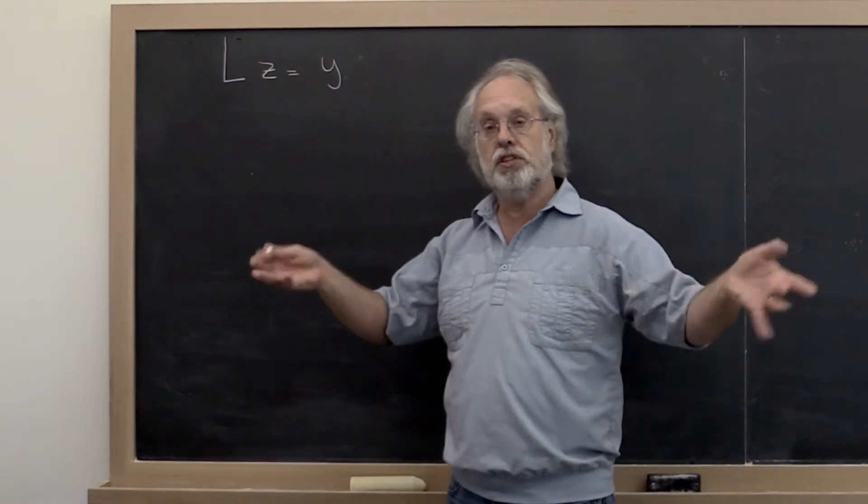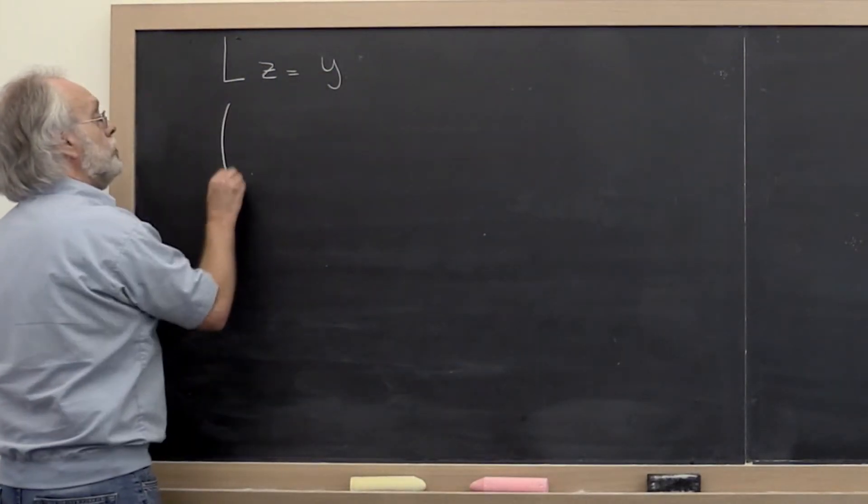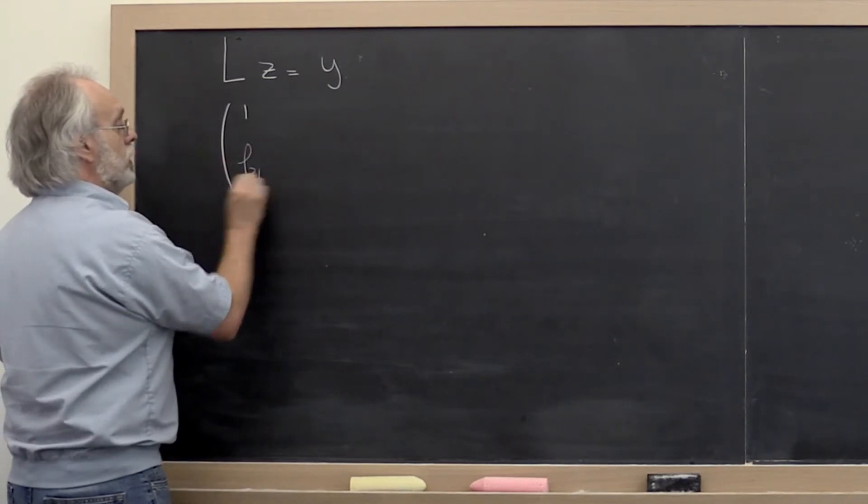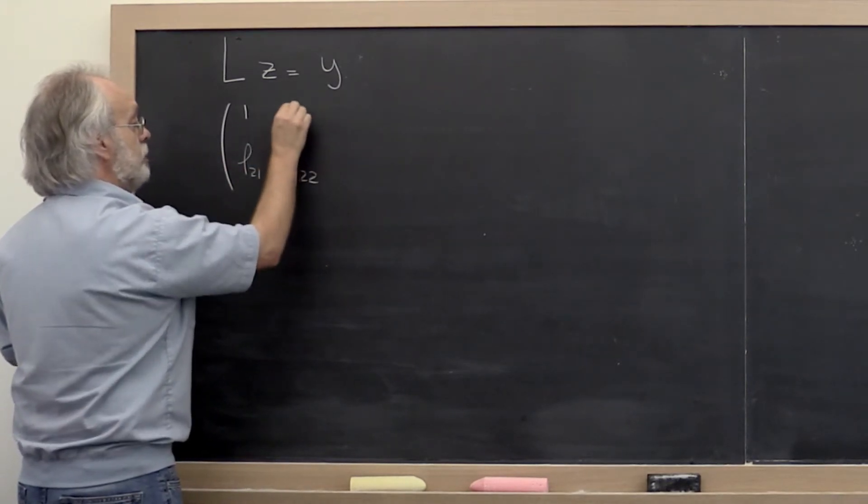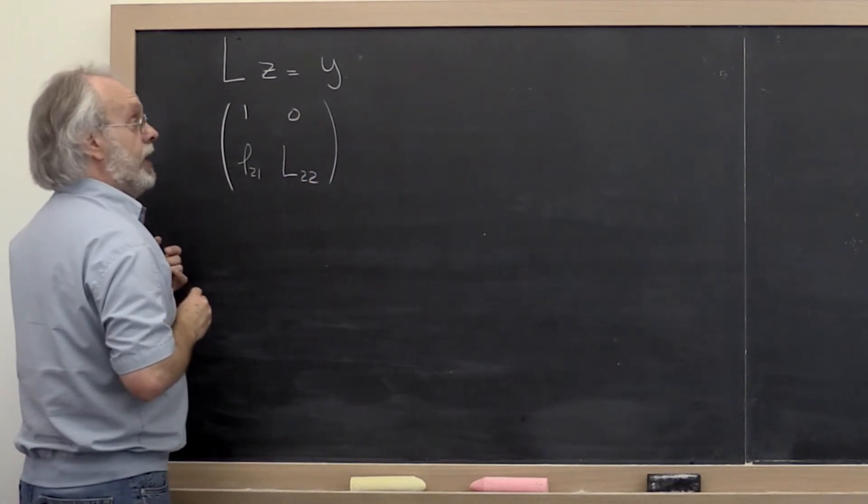Well, we like to partition things, right? So let's partition matrix L into the one that's on its diagonal, L21 below it, and L22 as the rest of the matrix, which itself is a unit lower triangular matrix.